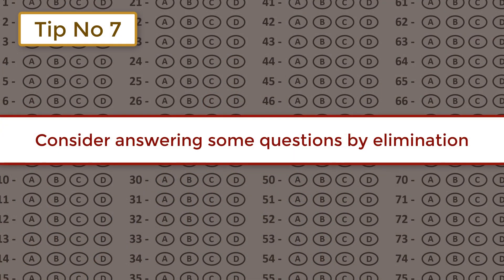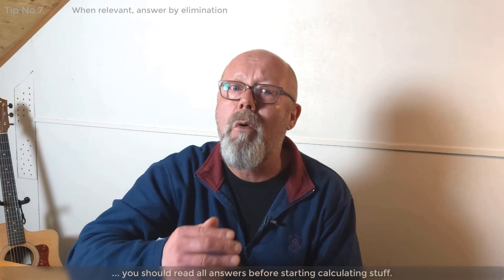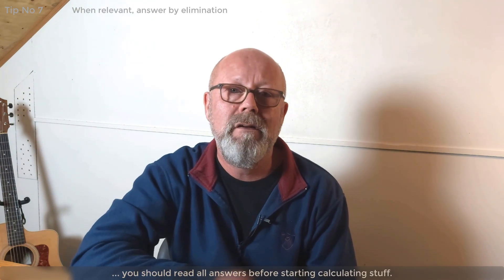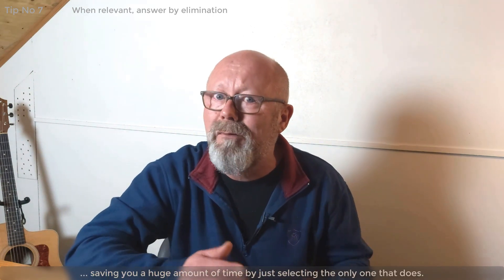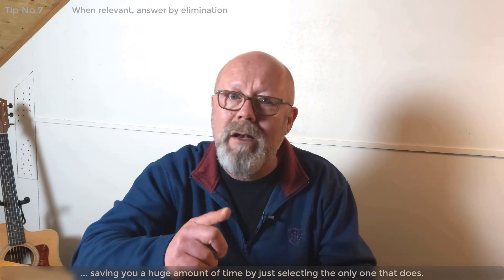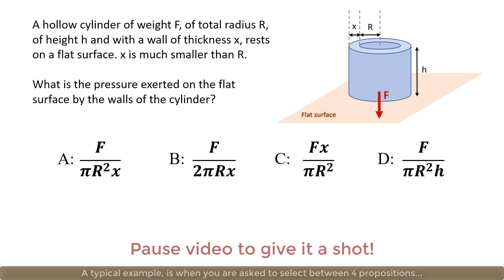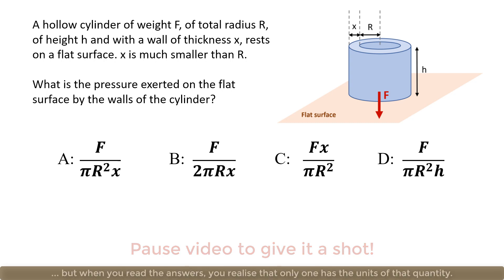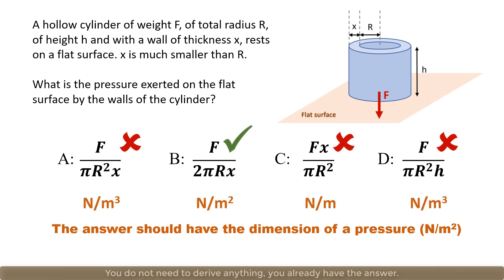Tip number 7: consider answering a question by elimination. As a rule of thumb, read all answers before starting to calculate. Sometimes 3 out of 4 will just not make any sense, saving you a huge amount of time by selecting the only one that does. A typical example is when you're asked to select the expression for a quantity — but when you read the answers, only one has the correct units for that quantity. You don't need to derive anything; you already have the answer.